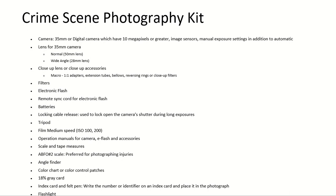The components of a crime scene photography kit are: a 35mm or digital camera with 10 megapixels or greater image sensors and manual exposure settings in addition to automatic ones; lens for 35mm camera — normal 50mm, wide angle 28mm; filters; electronic flash with remote sync cord; batteries; locking cable release used to lock open the camera shutter during long exposure; tripod; film medium speed; operation manuals for camera, e-flash and other accessories; scale and tape measures; ABFO 2 scale preferred to photograph injuries; angle finder; color chart or color control patches; 18% gray card; index card and felt pen; and flashlight.